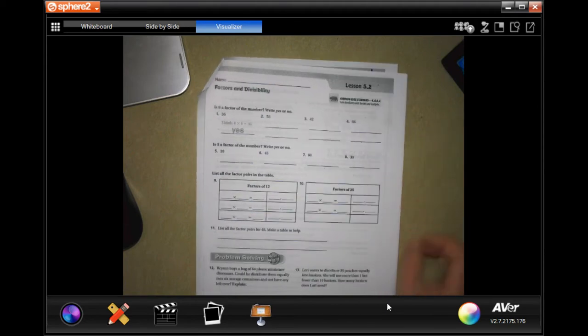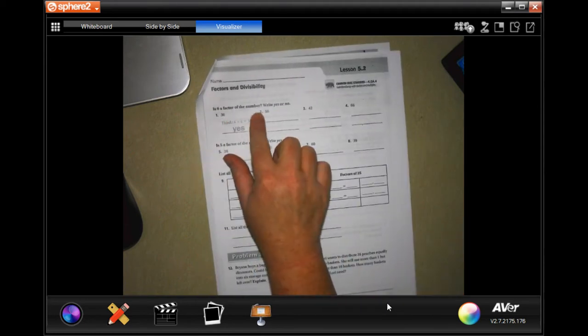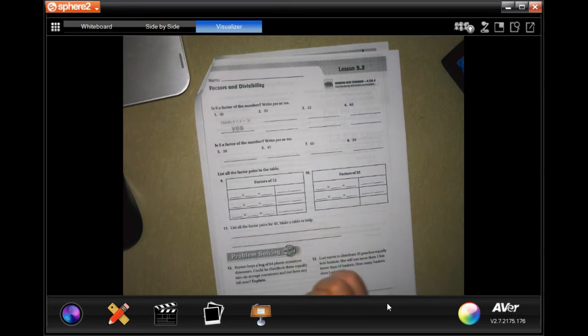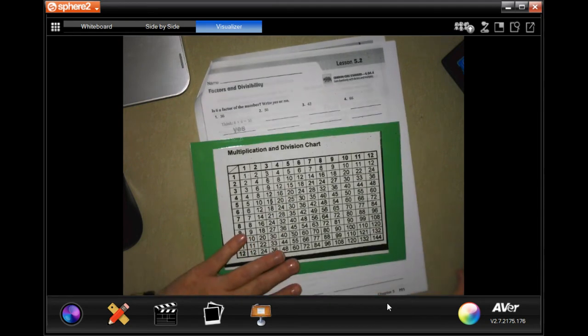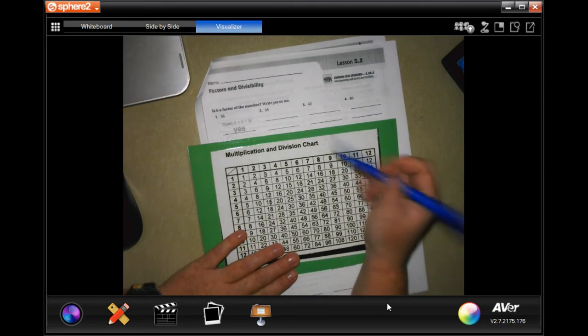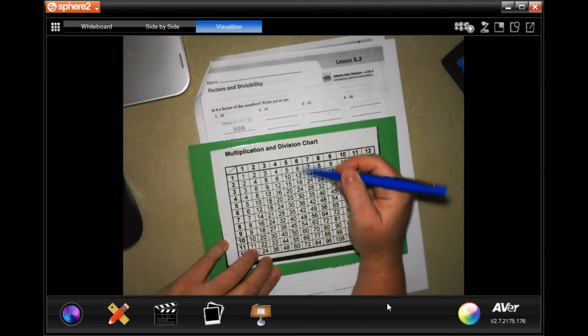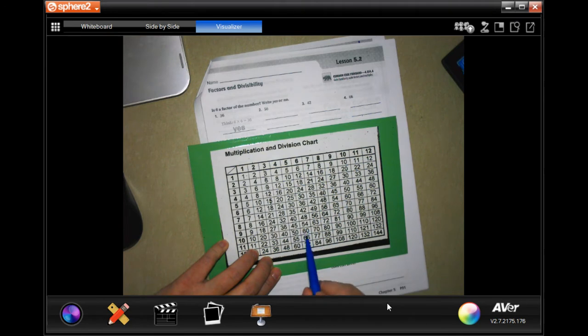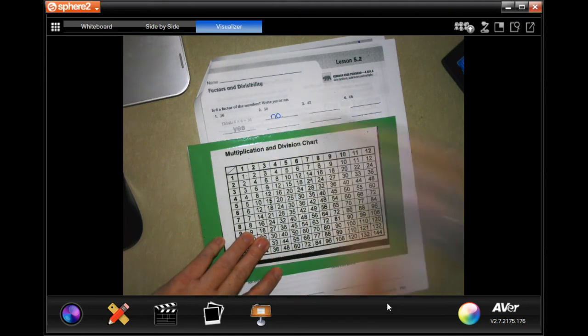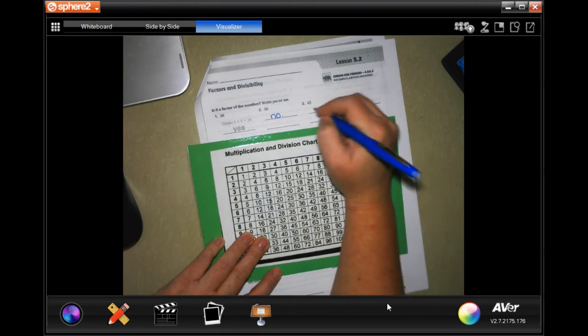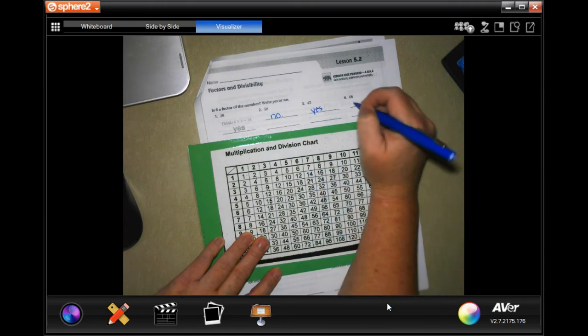And what we're going to do, number two, it says is six a factor of this number, which means can you multiply six by any number to get the number that they give you? Well, you don't have a multiplication chart yet, you should probably get one. And we're going to go down and see if six goes into 56, 54 and 60. So, no, into 42, yep, seven times. 66, yes, 11 times.